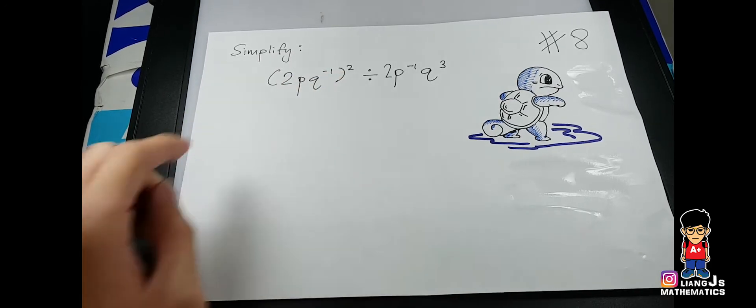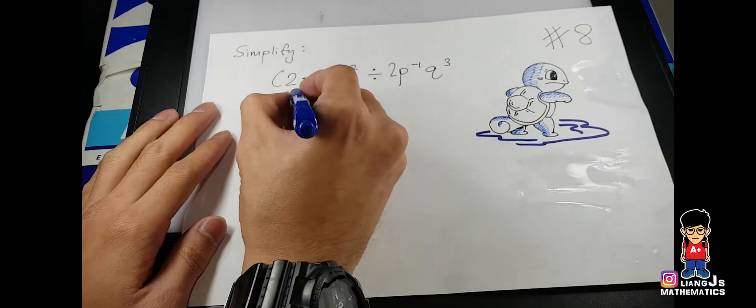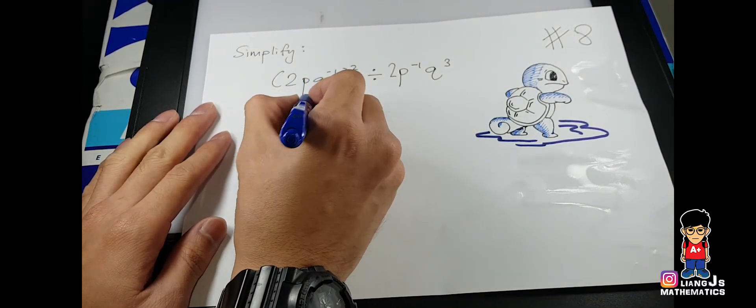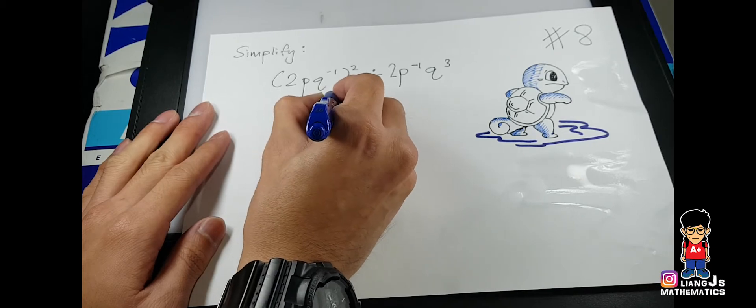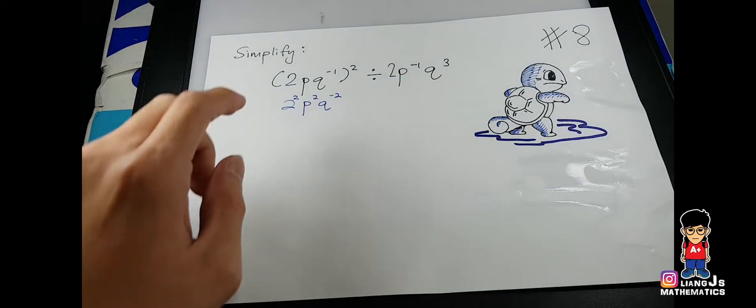So I can see here that I'll make this as 2 squared. I'll be writing extra working here, so P^2, and then Q^-2, because I did say that brackets means times, right? You times the index.